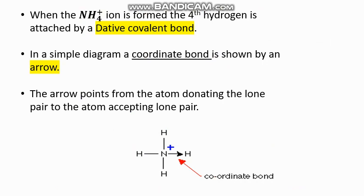In the ammonium ion, the fourth hydrogen atom is attached by a dative covalent bond, also called a coordinate covalent bond. The coordinate covalent bond is shown by an arrow mark, and this arrow mark points from the donor atom to the acceptor atom.